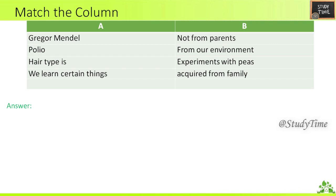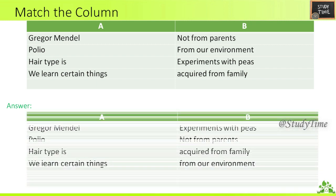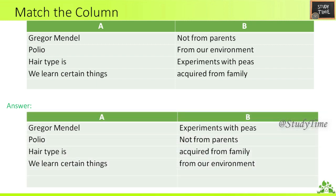First section is Match the Column. Column A and Column B are given. Gregor Mendel is a person who experiments with peas. Polio is not inherited from parents. Heart type is acquired from family. We learn certain things from our environment.